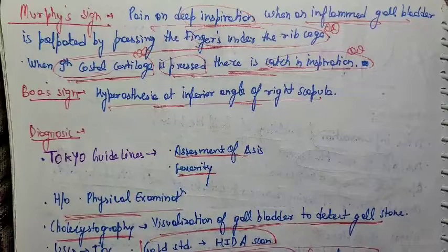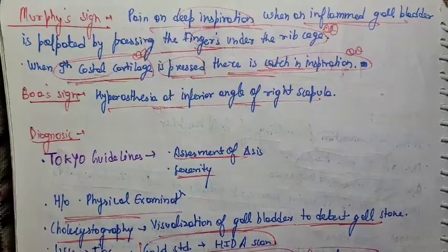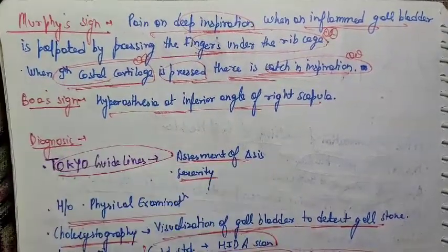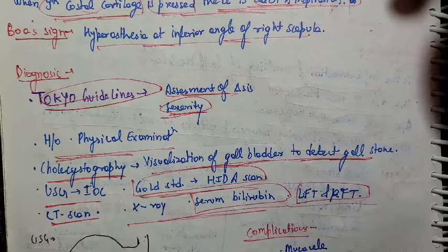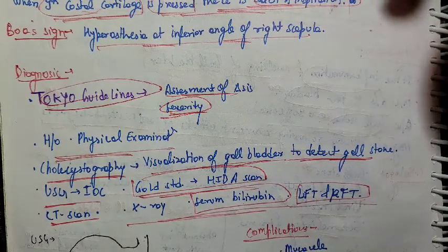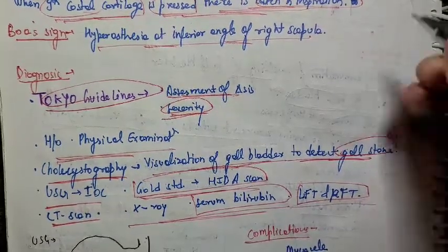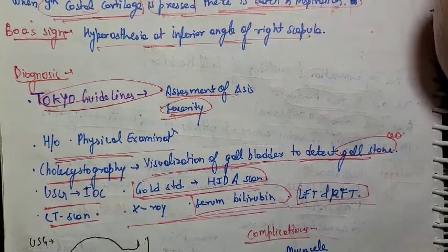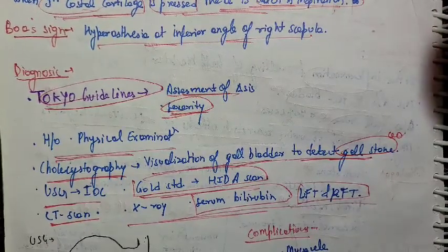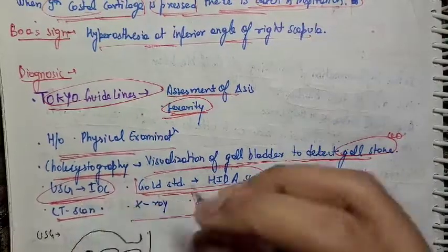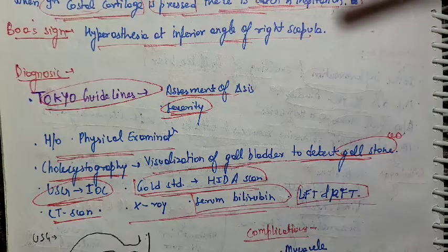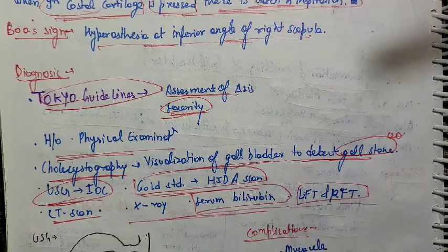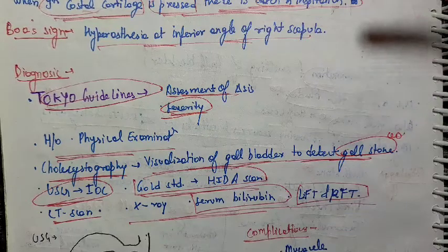For diagnosis, remember the Tokyo guidelines, which allow assessment of diagnosis and severity. Diagnosis begins with history and physical examination. Ultrasonography is done to detect gallstones and is the investigation of choice — all residents can order ultrasonography in the OPD. The gold standard investigation is a HIDA scan, but since it is very expensive, we generally prefer USG.